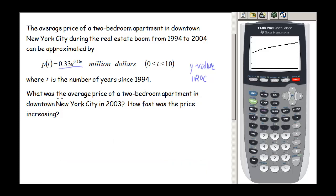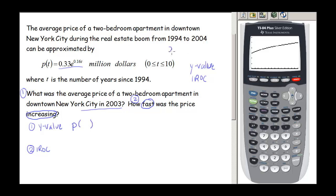The first question asks what is the average price of a two-bedroom apartment in downtown New York City in 2003 — that's asking for a Y value. The second question asks how fast was that price increasing — those key words tell us it's asking for the instantaneous rate of change. Since 2003 is 9 years after 1994, t equals 9, so they're asking us for P of 9.